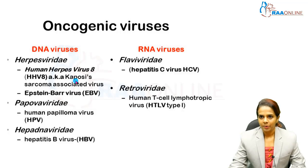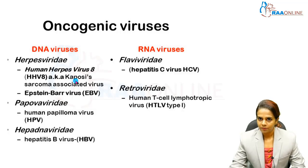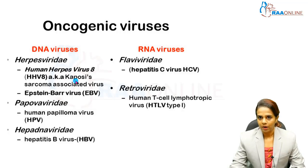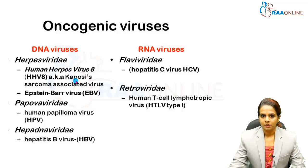The RNA oncogenic viruses include Hepatitis C virus, which comes under the Flaviviridae family, and HTLV type-1, that is human T-cell lymphotrophic virus. These are the oncogenic RNA viruses.